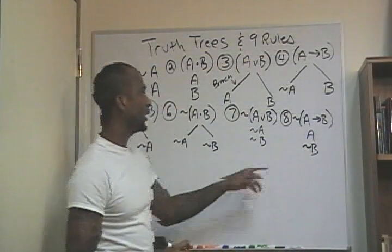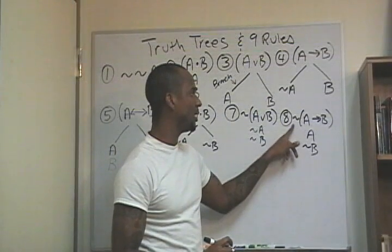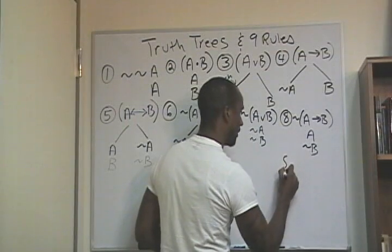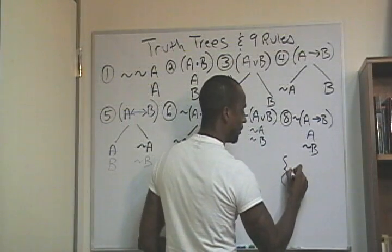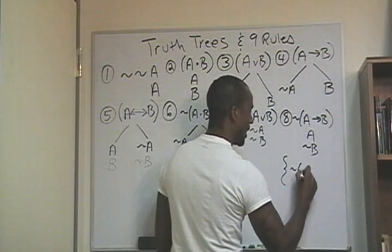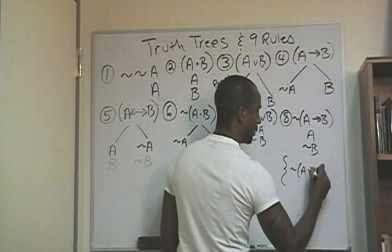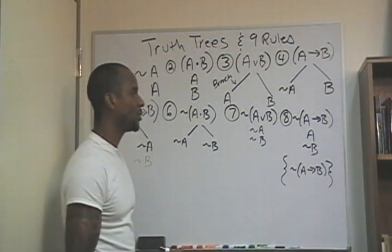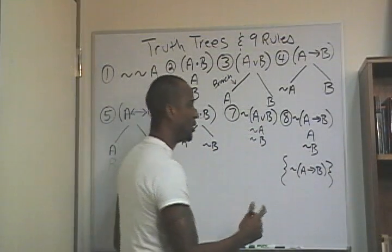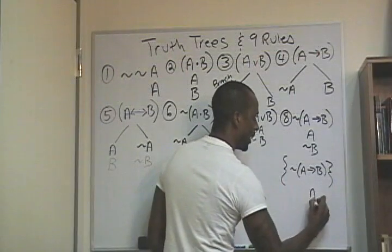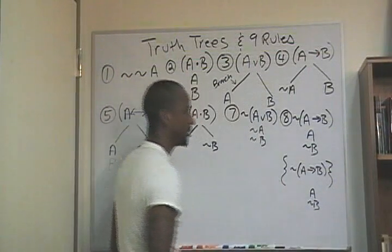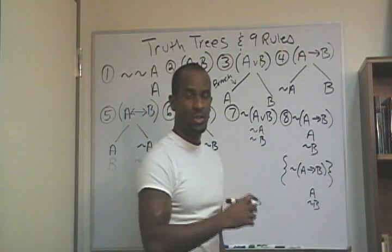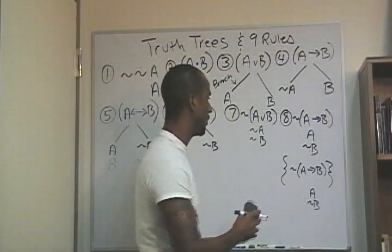So number eight looks like this: any time you have within your set the claim not (if A, then B) and you want to determine how this is sorted, you would be able to write A and then not B. That's the rule — make a note of that.